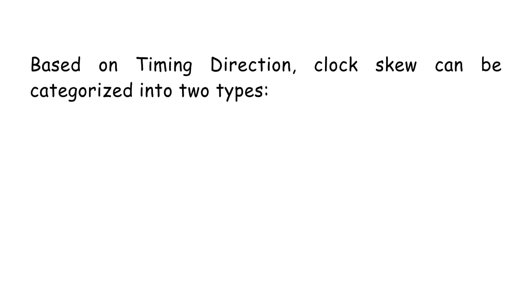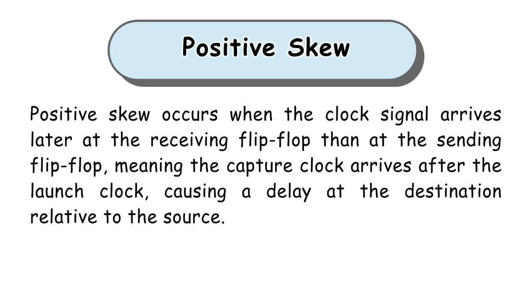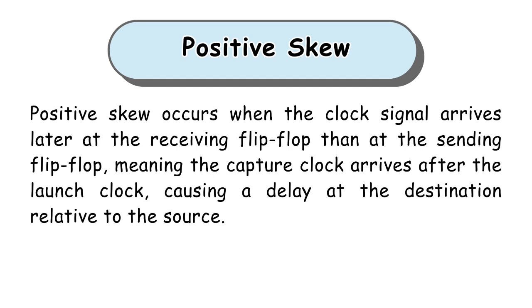Based on timing direction, clock skew can be categorized into two types: positive skew and negative skew. Positive skew occurs when the clock signal arrives later at the receiving flip-flop than at the sending flip-flop, meaning the capture clock arrives after the launch clock, causing a delay at the destination relative to the source.